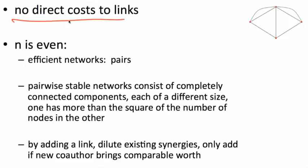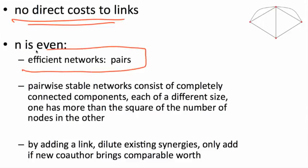There's no direct cost to links. Efficient networks are easy to check — they're always just individual pairs. That's the best way to do things. If n is even it's straightforward; if n is odd it gets a little more complicated. But generally, efficient networks are going to be just splitting society into pairs.